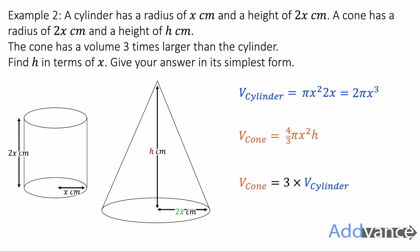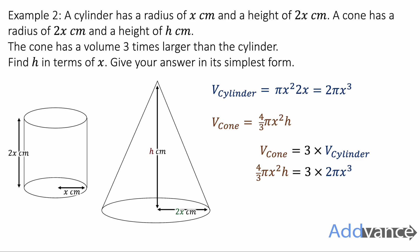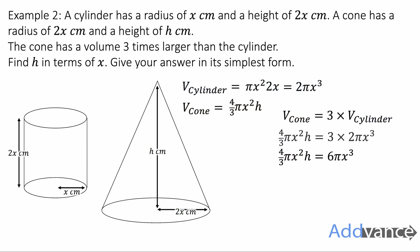We place that in our equation at the bottom. The volume of the cone is three times the volume of the cylinder, like this. That simplifies to be 6πx³. We divide both sides by π and that disappears. We divide both sides by x², x³ divided by x² is just x. Get rid of the divide by 3, we multiply by 3. Get rid of the times by 4, we divide by 4. We get 18x over 4, which simplifies to be 9x over 2, because we wanted our answer in the simplest form. And that is the expression of h in terms of x.